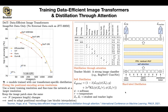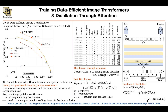You can also do hard distillation: take the argmax of the teacher's predictions, turn those into one-hot vectors, and give those as labels to the distillation head. This way you are able to increase the performance of DeiT. It is a Vision Transformer that does even better than convolutions, but to do so you need a lot of data augmentation and help from a convolutional neural network teacher.